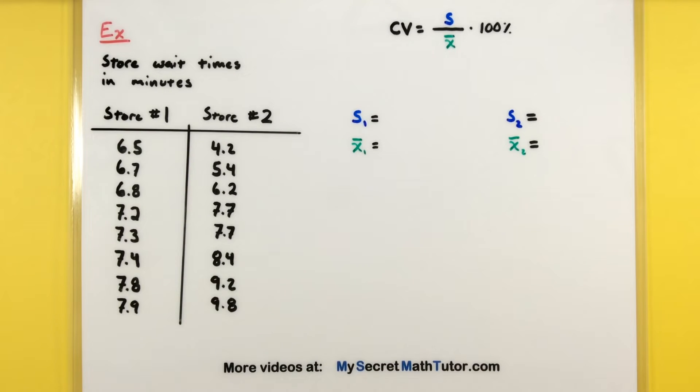Alright, so in this cooked up example, what we have here is some data on store wait times in minutes. So here I have store number one, and I have store number two. And the idea is we're trying to compare what the variation is between these, and we might expect that the mean for these store wait times, they're going to be different.